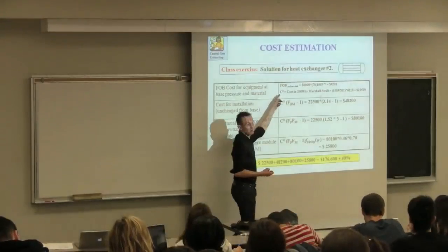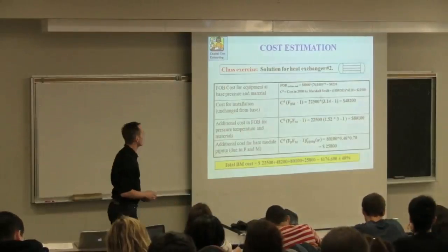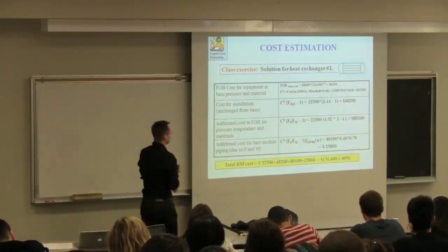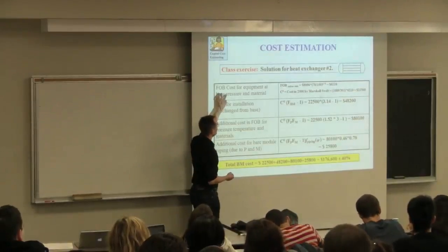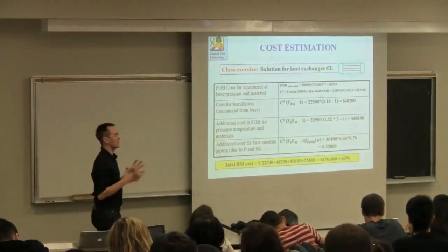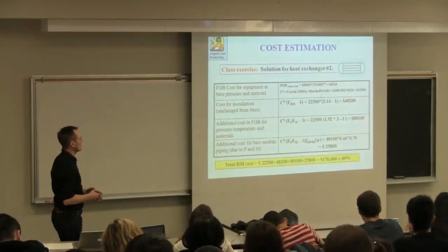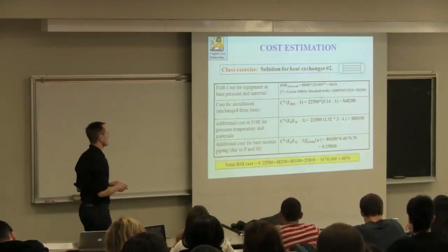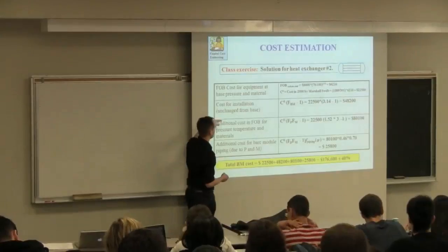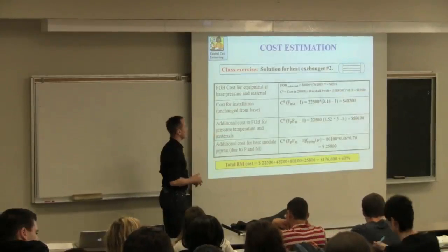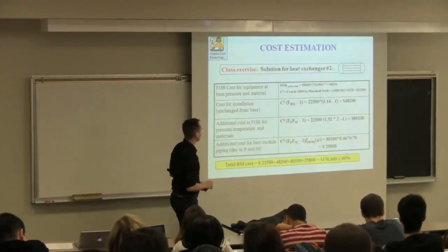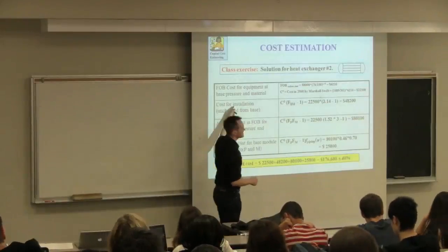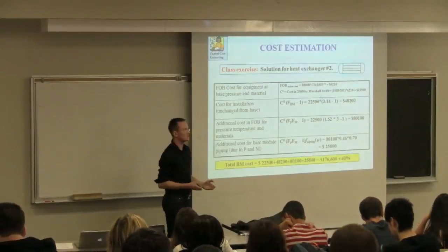Then you can inflate to 2008 dollars by using the Marshall and Swift index. So 1089 for value of 2000 divided by 301 for value of 1970. So a $6,000 heat exchanger in 1970 costs $22,500 in the year 2000. This is the price that you would get on the quotation from the supplier of the heat exchanger. That's the FOB price. But when we take that, what we would normally do is we would normally just take that price of that equipment, and then multiply it by the bare module factor to get the price of that unit fully installed at our site. But the reason why we don't just go ahead and multiply by the bare module factor and end the problem there is because in this case, we have some additional changes to make to account for the fact that we're operating at higher pressure and with different materials of construction.